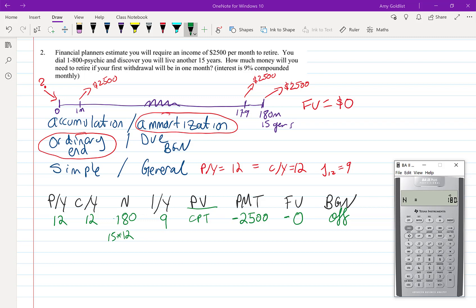N is 180. IY is 9. The present value is what I'm computing. 2,500 negative is the payment and future value is zero. So I'll compute the present value and we get a very big number.